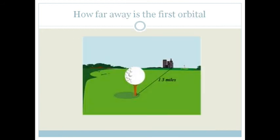Let me give you another analogy. Let's say you've got a golf ball, but this time the golf ball represents the electron. And that there in the background, that city over there, is the nucleus. So if that is the city and that's the nucleus, look how tiny the golf ball, or the electron, is. And how far away is the first orbital? It is 1.5 miles.